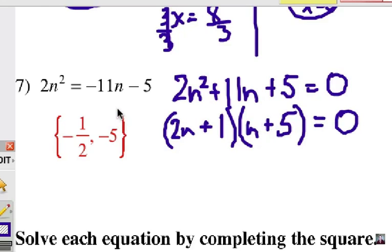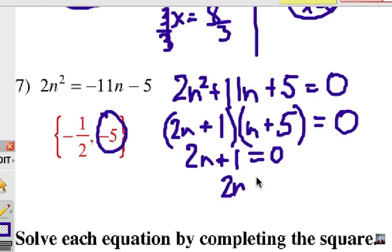And so n plus 5 equals 0, that's where I get my negative 5 answer inside that binomial. And then if I set this equal to 0 for my other answer, I'm going to subtract 1 on each side. So it becomes 2n equals negative 1. I'm going to divide each side by 2. And that's where I get the negative 1 half.